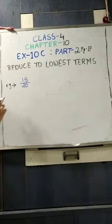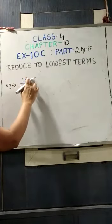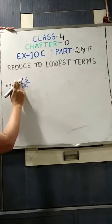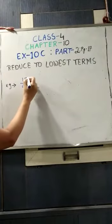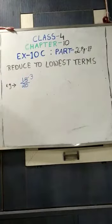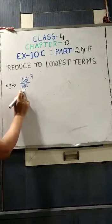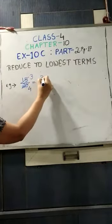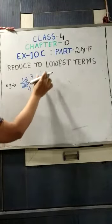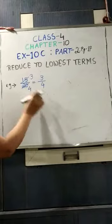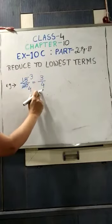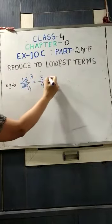So the next number is 5. 15 is divisible by 5 — 5 threes are 15. 20 is also divisible by 5, so we will take 5. If we divide 15 by 5 the result is 3, and if we divide 20 by 5 the result is 4. Now 3 by 4 — we cannot reduce 3 by 4 any further because there is no other number except 1 that divides both numerator 3 and denominator 4. So 3 by 4 is our answer.